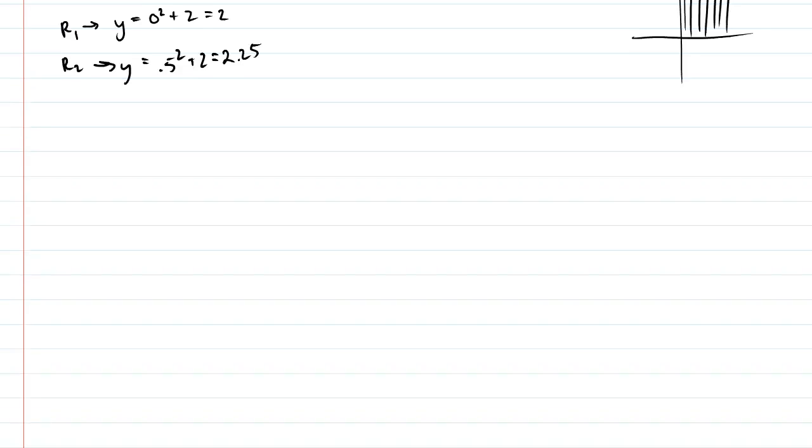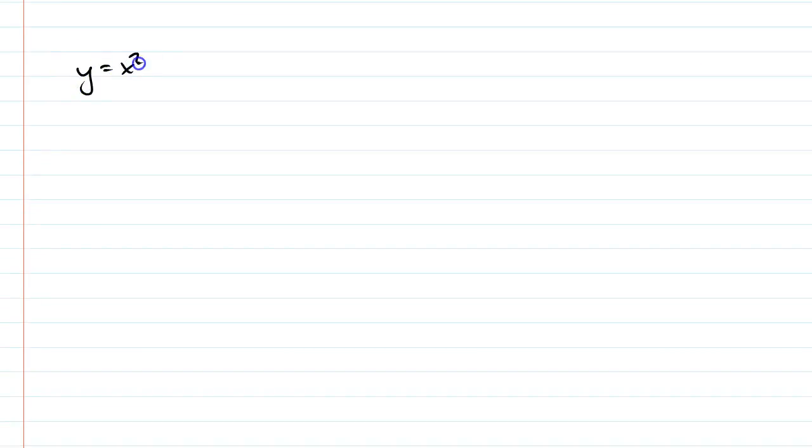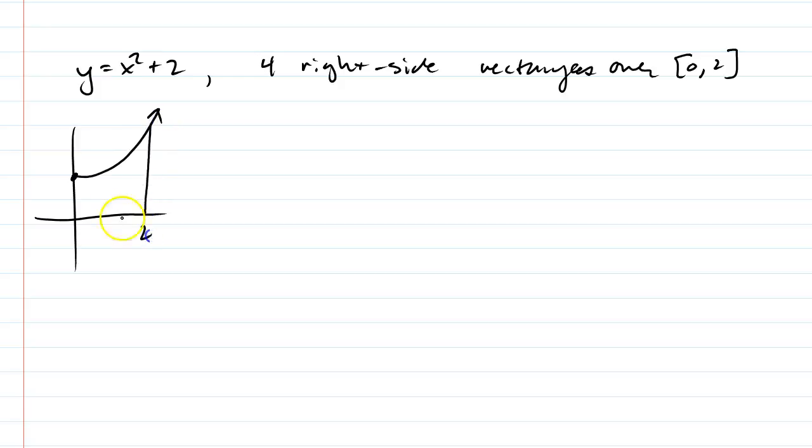Okay. So we're going to do another one. We're going to use the same curve. We're still going to do y equals x squared plus 2. But we're going to use 4 right side rectangles over the same interval. Okay. So let's do another graph here. This is 2, 1. And then we cut it up into four sections. So our other locations are 0.5 and 1.5. Now right-sided rectangles mean we take the spot on the right side of the interval and bring it over to create a rectangle.